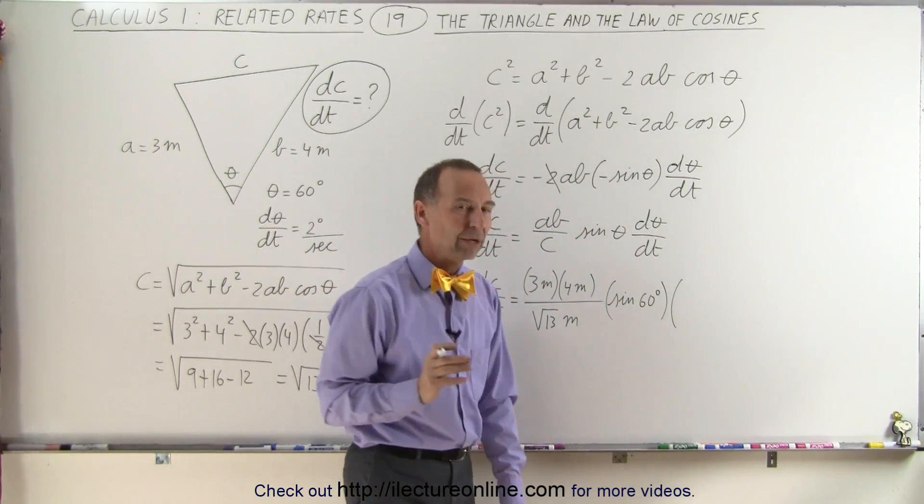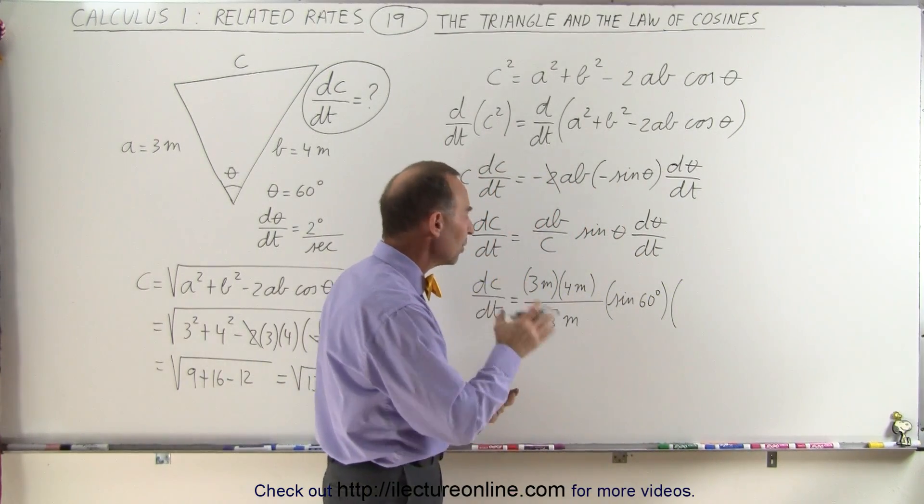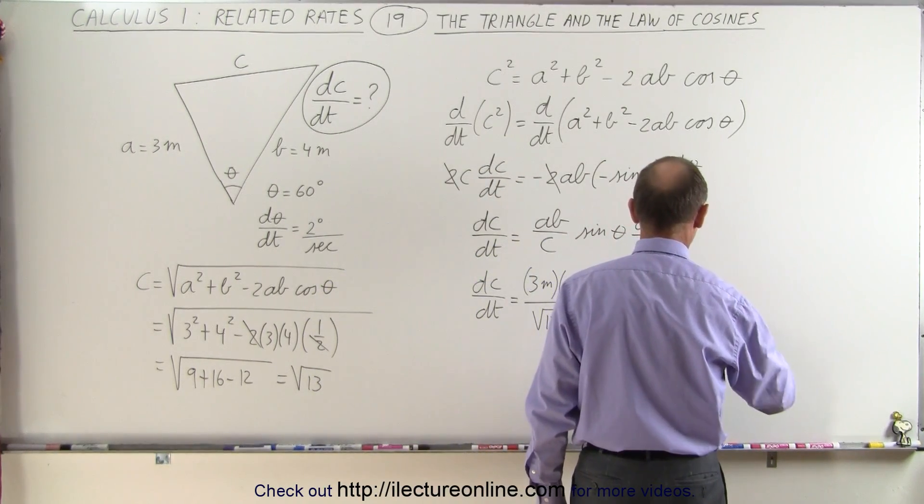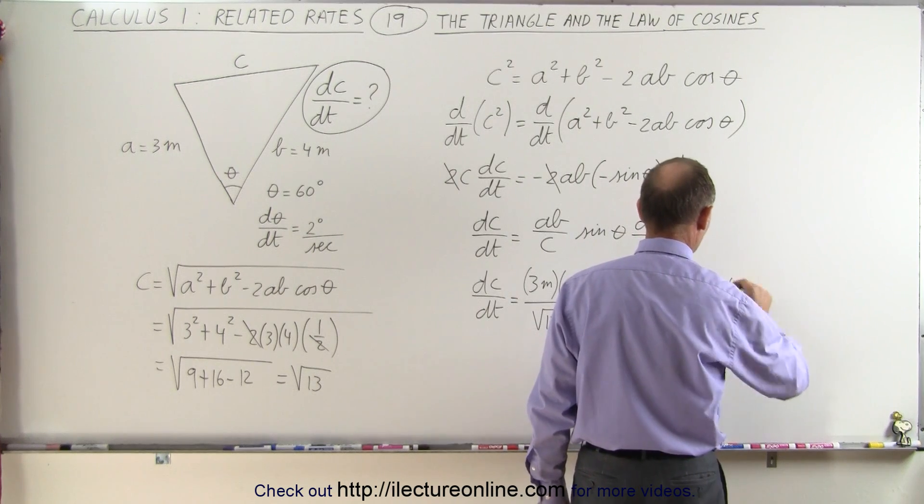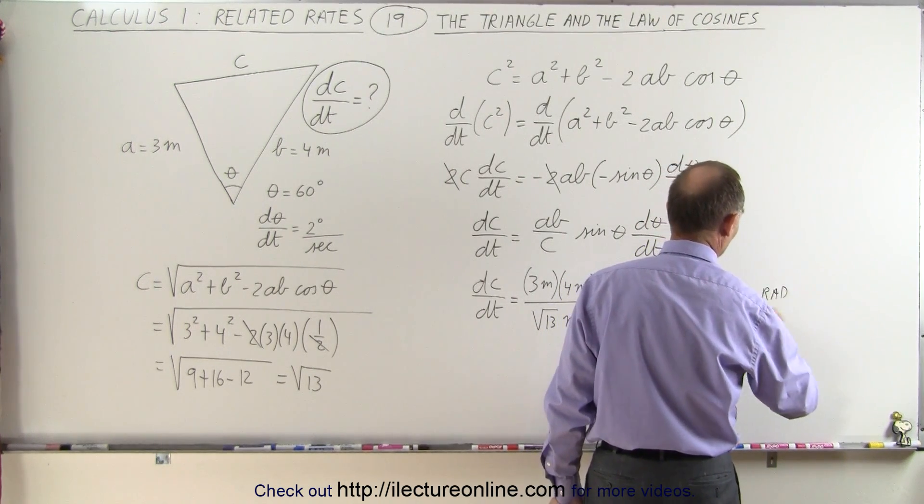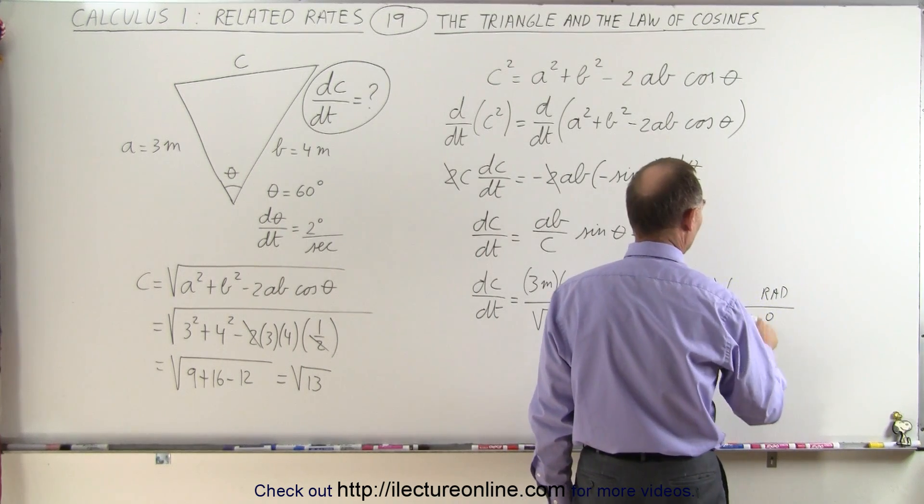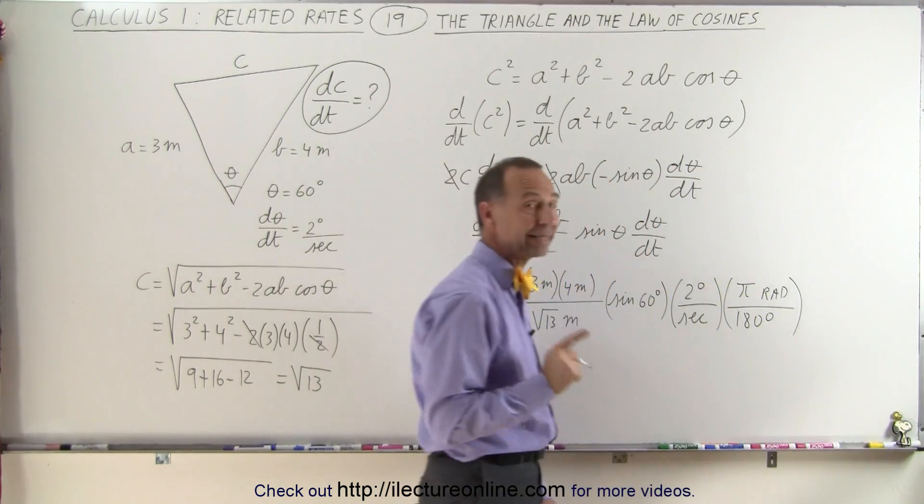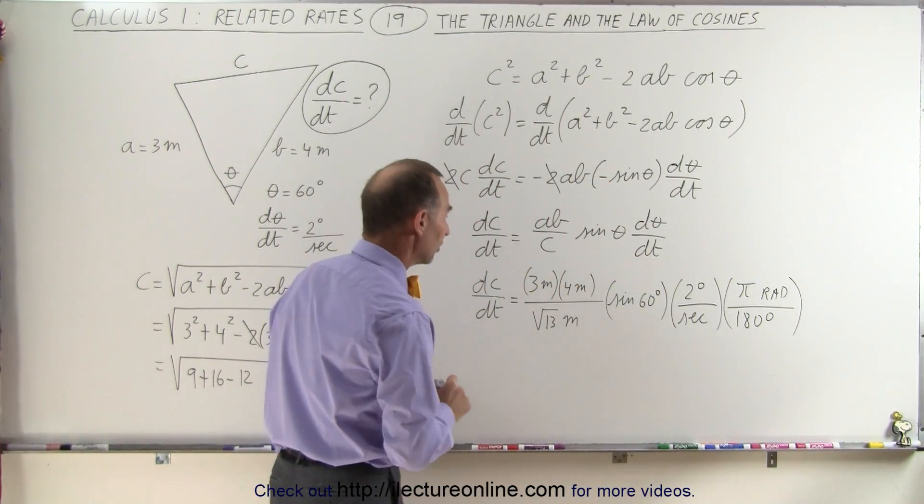Now I have to be careful here, because we can't express it in terms of degrees, we have to change it to radians, so we have 2 degrees per second. We need radians at the top and we have degrees at the bottom, and we have π radians for every 180 degrees, so we do have to make that compensation there.